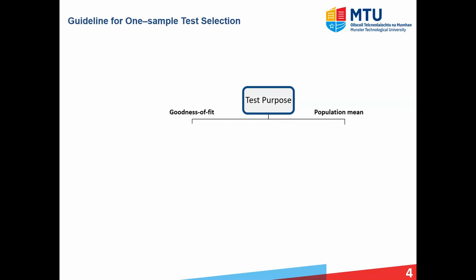Firstly, we're going to look at some guidelines for one-sample test selection — where you have a population and take one sample from it. We're going to use a tree diagram to summarize the various options available, and as mentioned, this is only a guideline. Starting with our test purpose, we've got two options: we can either go with a goodness of fit, which assesses how well observed data matches some expected distribution, or a population mean test for one sample, which assesses if the mean of a single sample is statistically different from a known or claimed population mean.